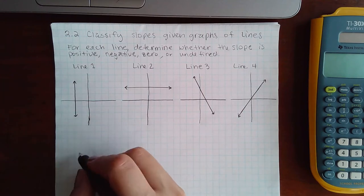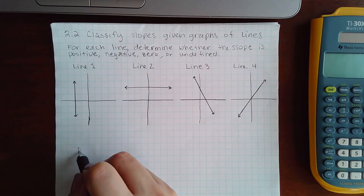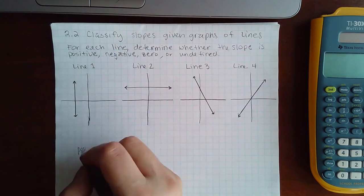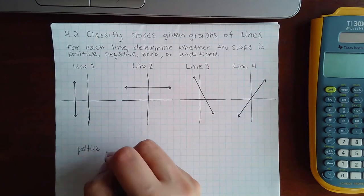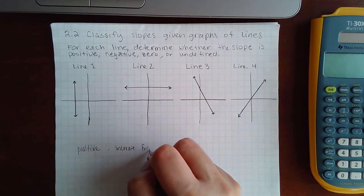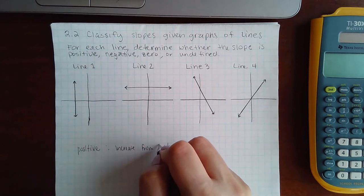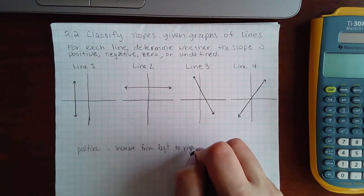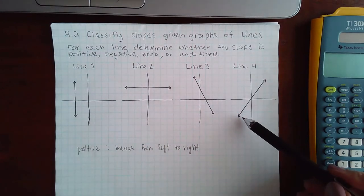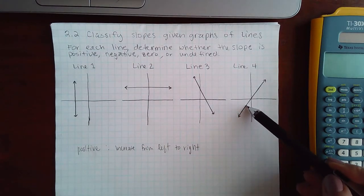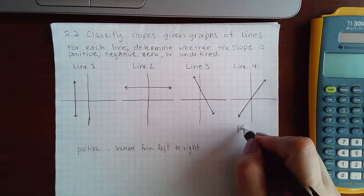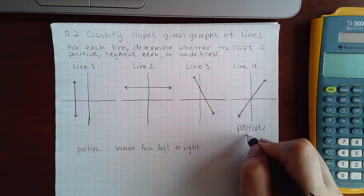So if it is positive, it will increase from left to right. I can see as I trace this one from the left, it's going up, so it's increasing. This one is actually going to be a positive slope.